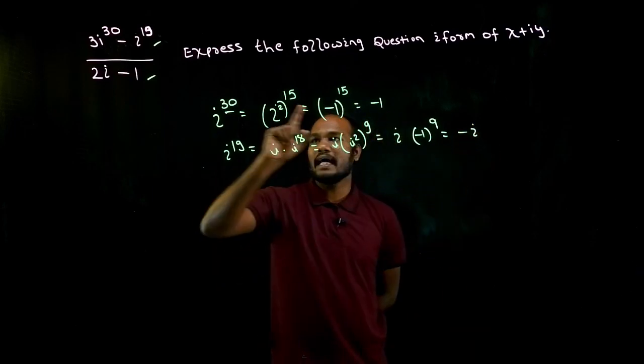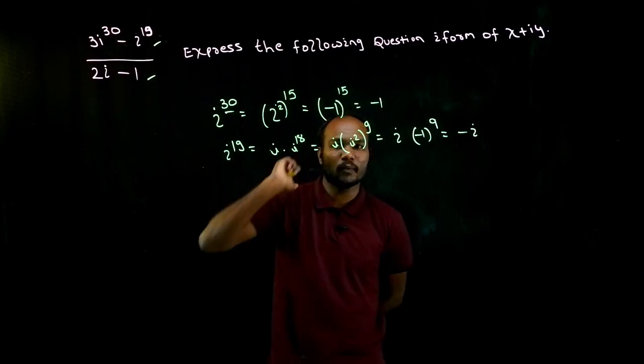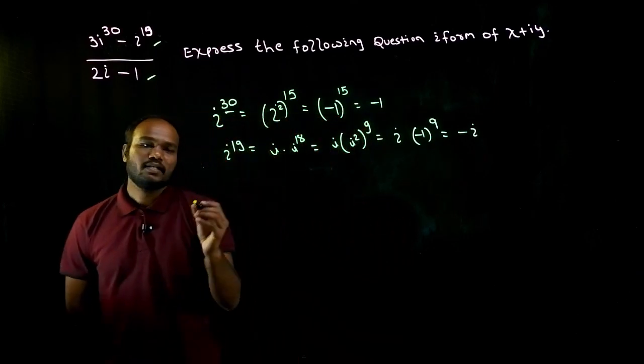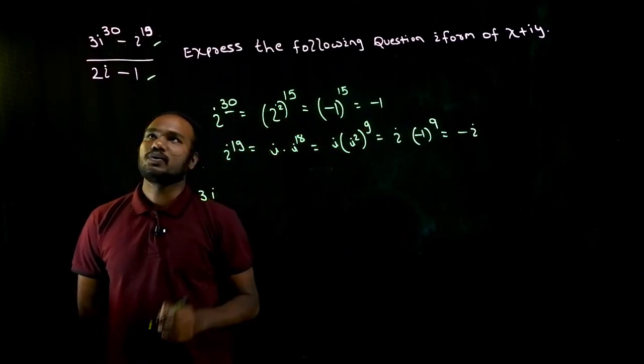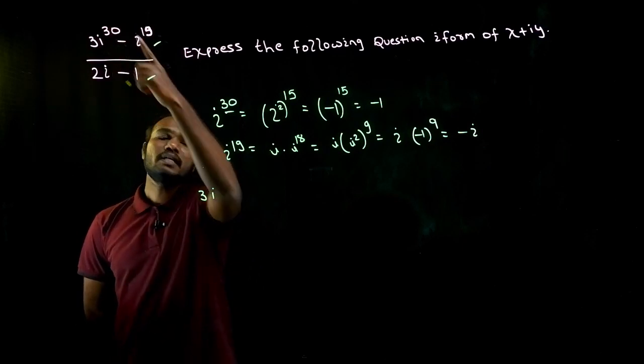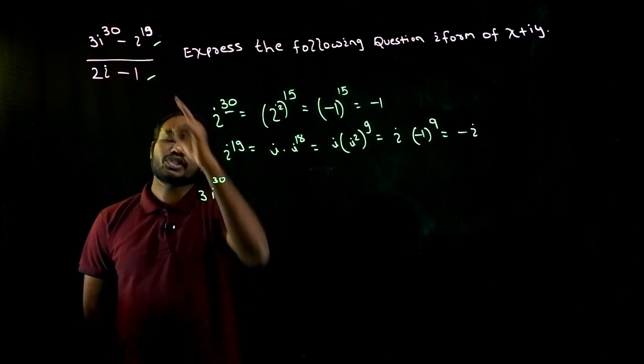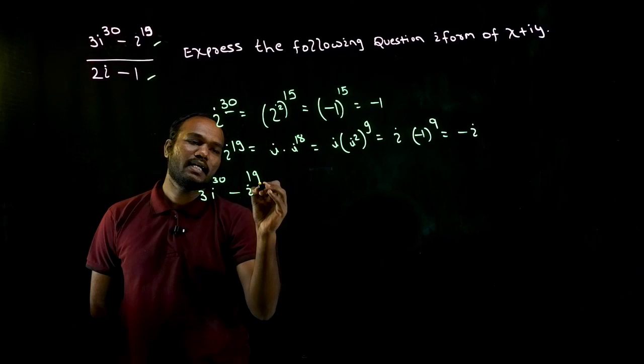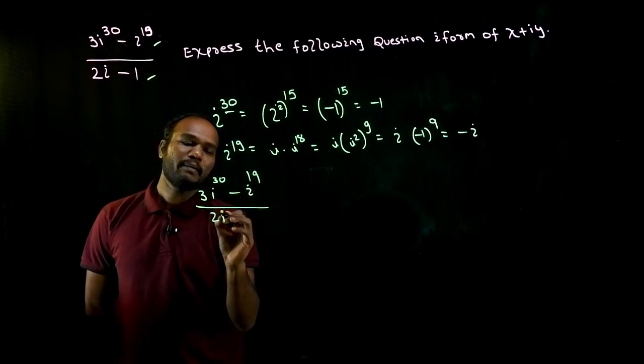So i power 19 is minus i. i power 30 is minus 1. So we just have to replace that. So three times i into, sorry, i power 30 is what? I'll take the question again: 3i to the power 30 minus i to the power 19 divided by 2i minus 1. This is the question.